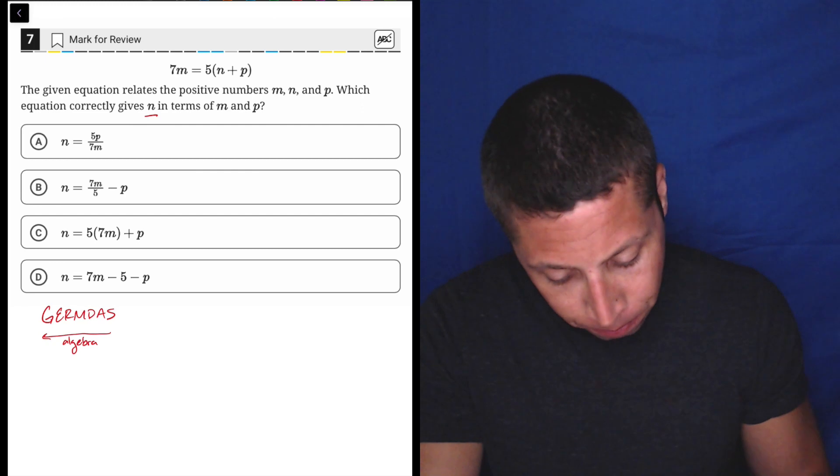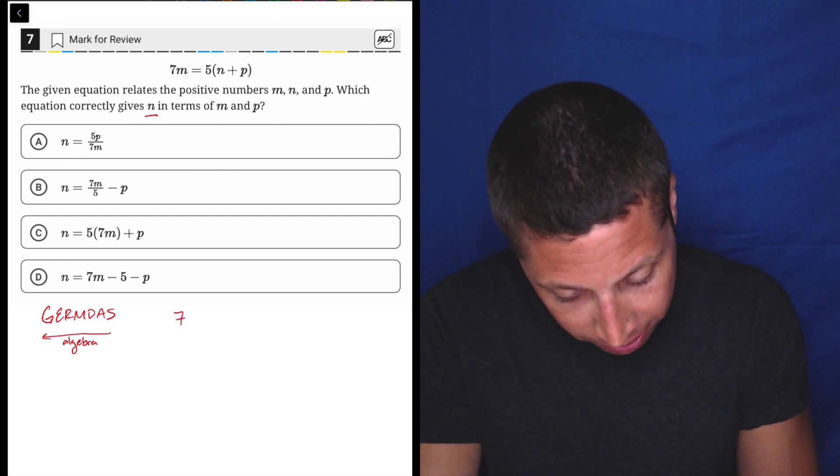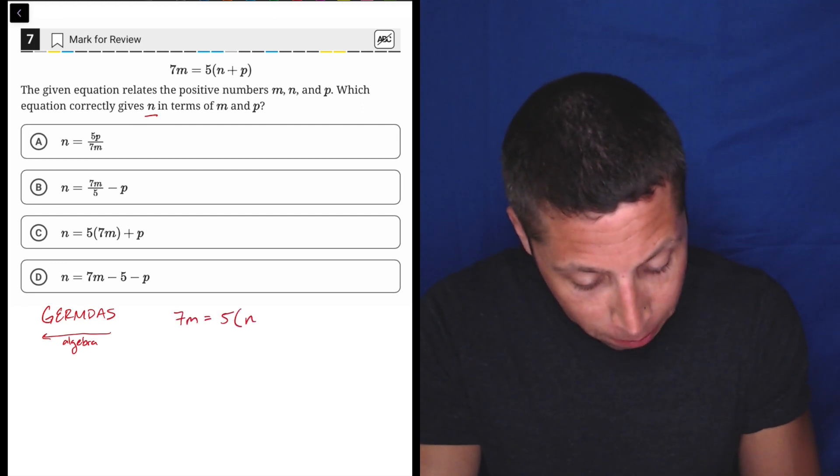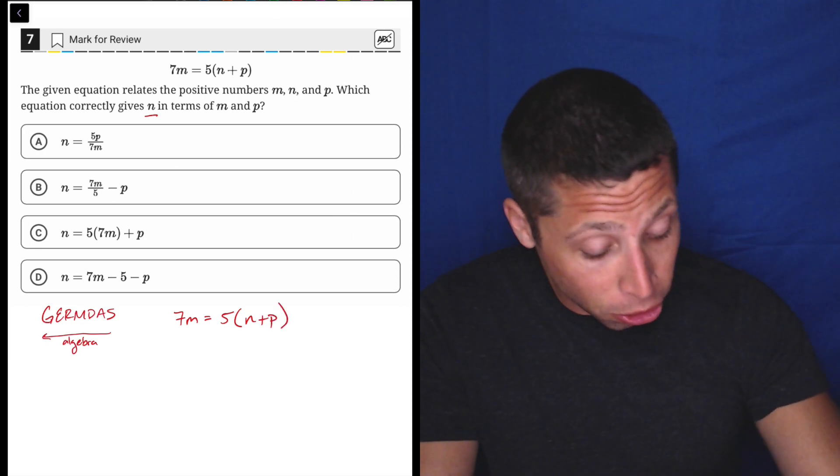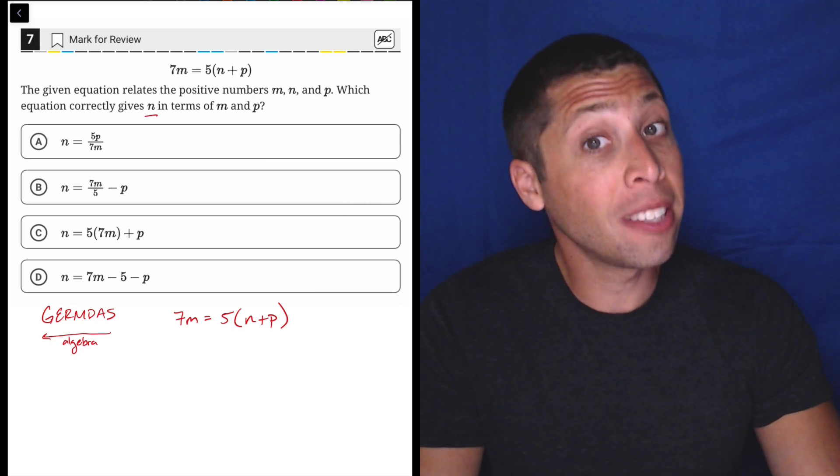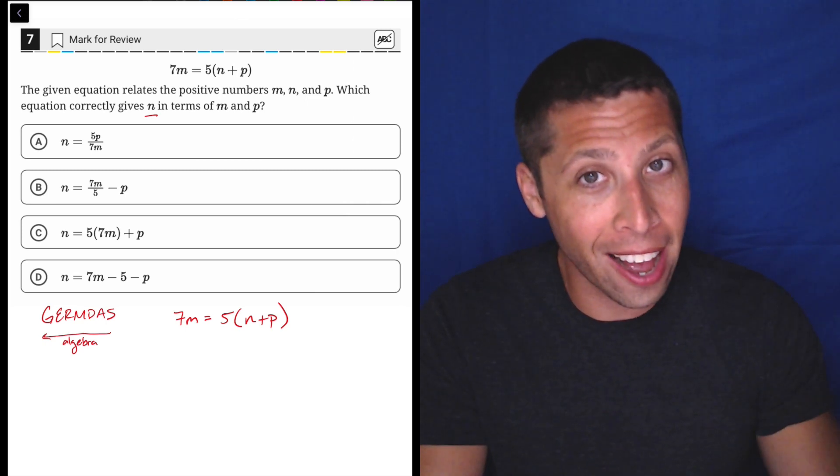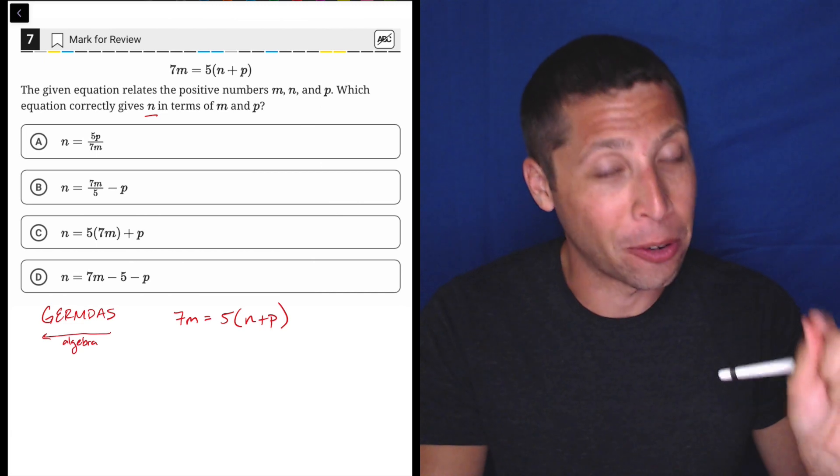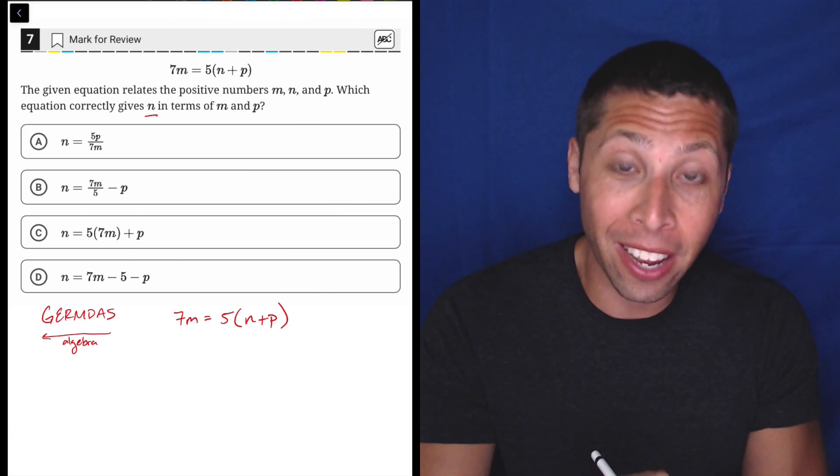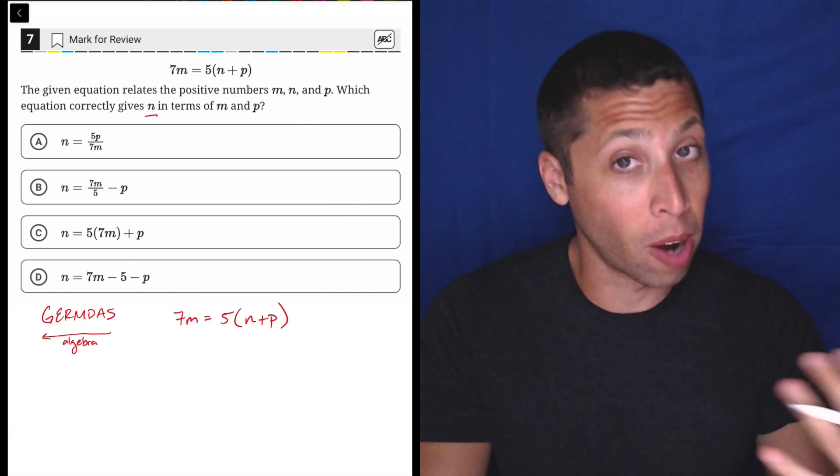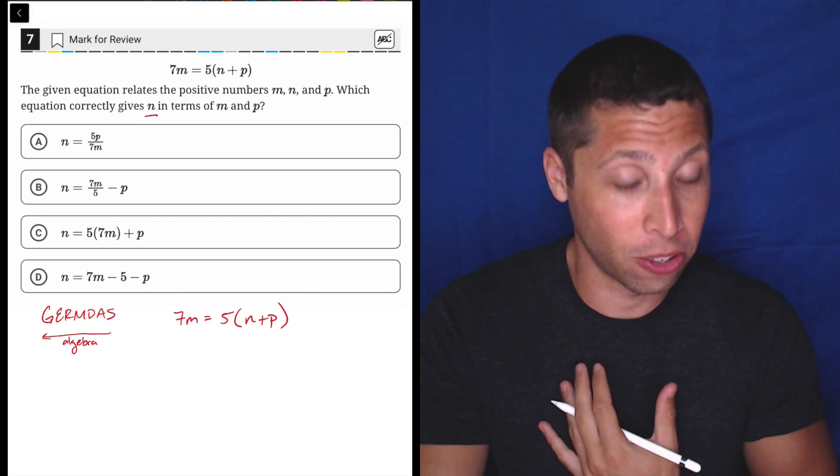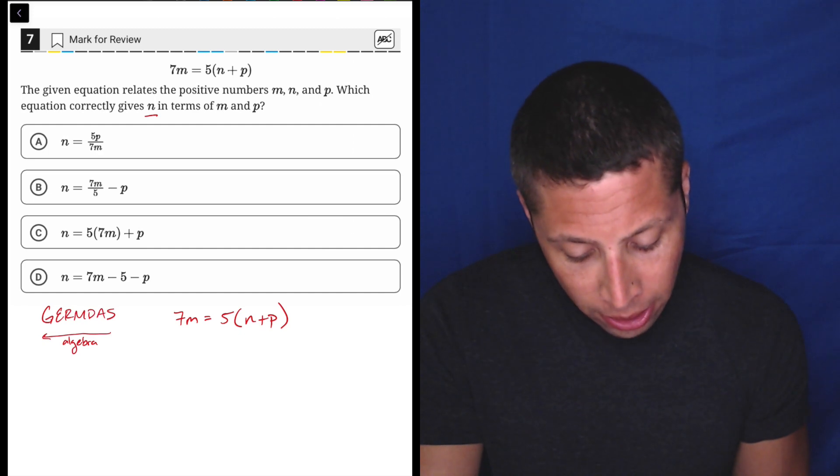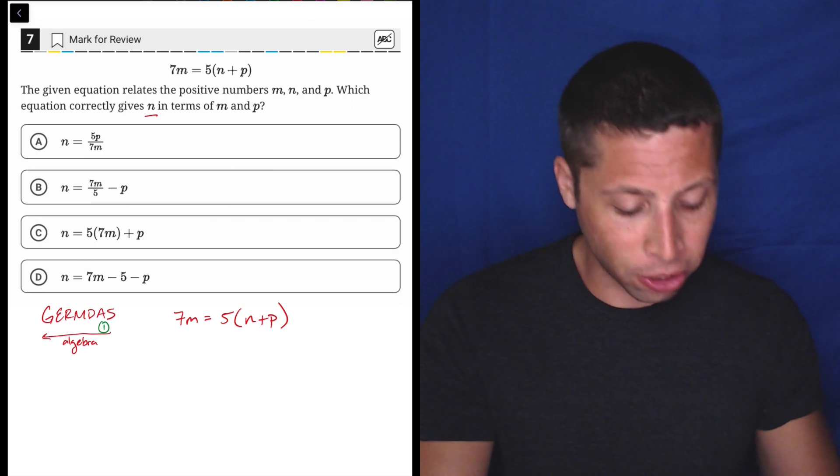So how is that going to work here? Well, I would take my 7m equals 5 times n plus p, and I could distribute that 5. But that's a simplifying step, right? Because it only happens on one side of the equation. That's simplifying. If it only happens on one side, if it happens on both sides, that's solving. So what I would do is, since I'm trying to solve, I am going to move the 5 first. So if I'm looking at GEMDAS in reverse, my first step is actually to do addition and subtraction.